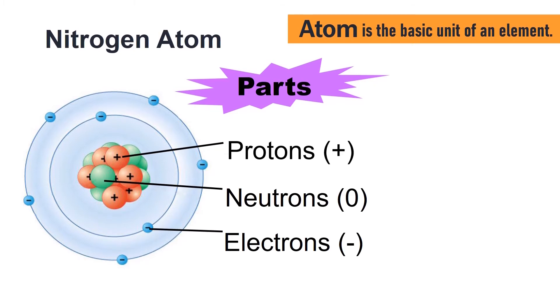The number of protons is the atomic number of an element. Let us count the protons of nitrogen: 1, 2, 3, 4, 5, 6, and 7. The number of protons of nitrogen is 7. So, 7 is the atomic number of nitrogen.